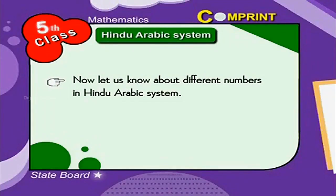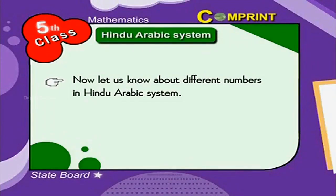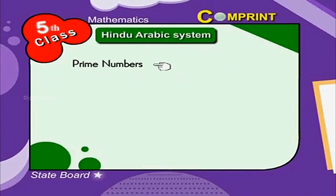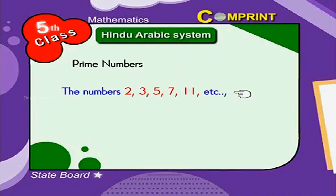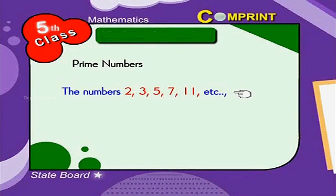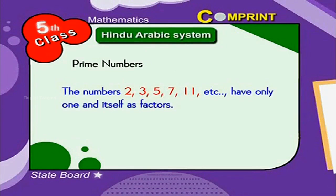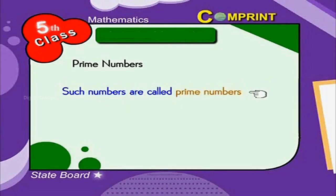Now let us know about different numbers in the Hindu Arabic system. Prime numbers: the numbers 2, 3, 5, 7, 11, etc. have only 1 and itself as factors. Such numbers are called prime numbers.